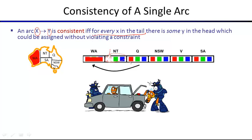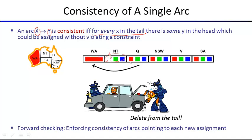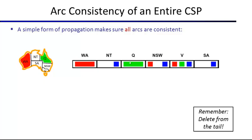Forward checking is actually enforcing arc consistency for a specific set of arcs — those pointing into the variable you just assigned. Enforcing full arc consistency considers all arcs. The critical insight: it's not enough to look at each arc once. Whenever you delete something from a variable's domain, you must reconsider all arcs pointing into that variable, because deletions there may allow further deletions from their tails.